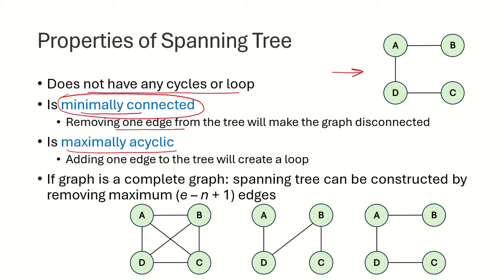The spanning tree is maximally acyclic — if we add one edge to the tree, it is going to create a loop. If we add this edge, we can see that a loop is created; if we add this other edge, again a loop is created. So the spanning tree needs to be maximally acyclic.